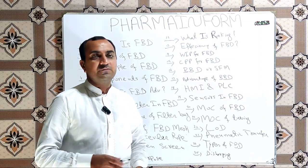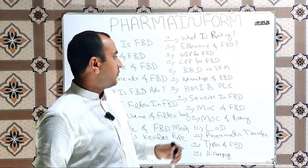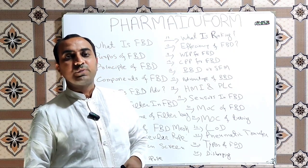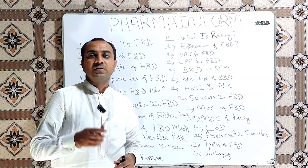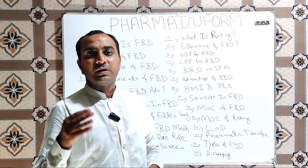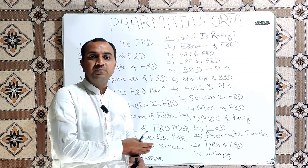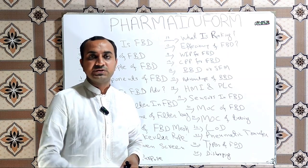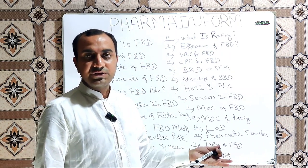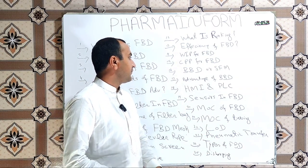What is the CPP for FBD? What are the critical process parameters for FBD? Usually critical process parameters for FBD are temperature of inlet air, temperature of outlet air, temperature of our product, and airflow volume meaning fluidization pressure. These are the critical parameters of FBD.